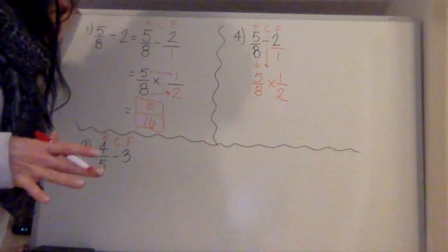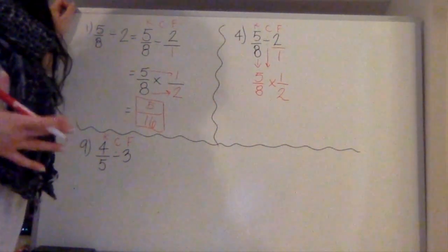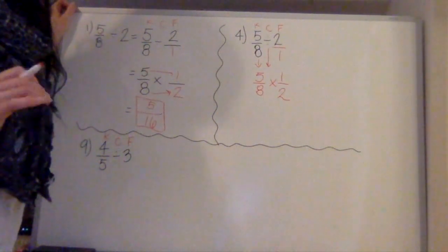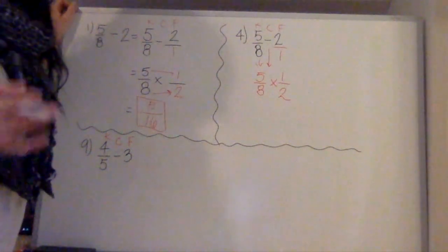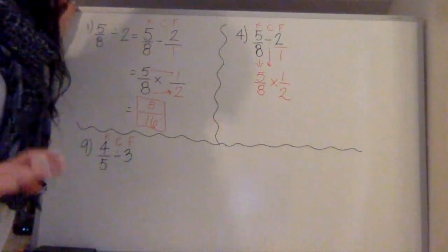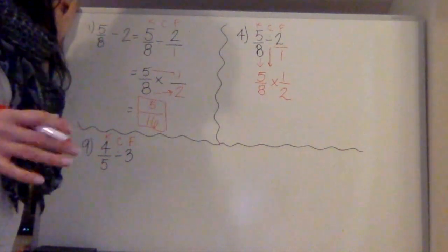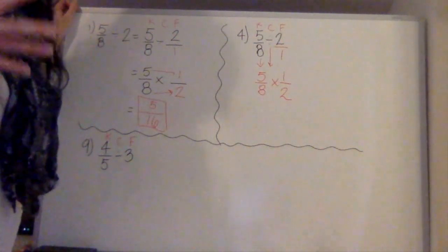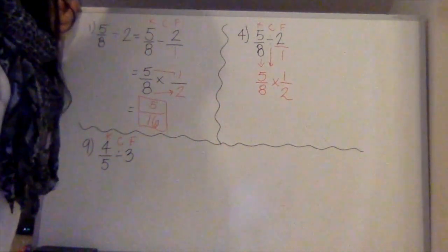Of course, I should have prefaced this before, but just to remind everyone, the reason why we use keep, change, flip is because when we're dividing by fractions, or dividing fractions at all, it's the same as multiplying by the reciprocal, which you've heard me say a thousand times by now. And if you need the reminder, the reciprocal is when you take the numerator and the denominator, and you flip them. The numerator becomes a denominator. The denominator becomes a numerator. All right?